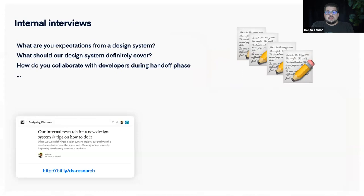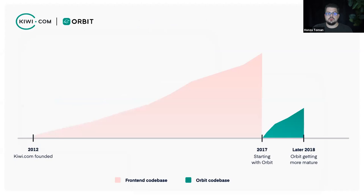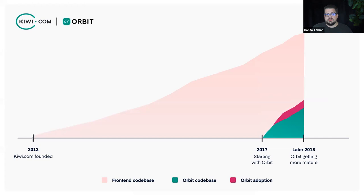We also looked at how people were collaborating with developers during the handoff phase and took notes. I also wrote an article you can read for more about the process. After analyzing all the collected feedback, we created a version-one roadmap, which we presented to stakeholders. After a few months, the first version of Orbit was created, and it kept growing — more components, more guidelines, more codebase as new features were introduced using the design system.